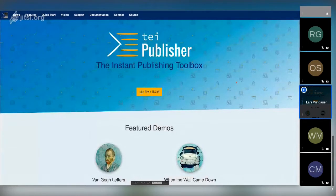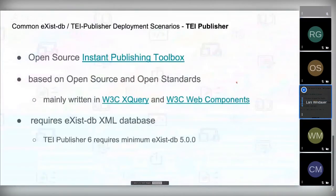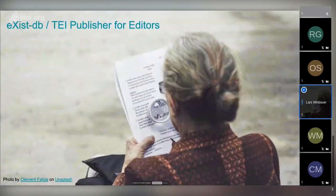TEI Publisher is a product we built on top of eXist-DB. It's our instance publishing toolbox. The main focus was on publishing TEI, but it is capable of rendering any kind of markup, like DocBook or any other format. It's open source and based on open standards — mainly written in XQuery and web components, both standards by the W3C. TEI Publisher's main dependency is eXist-DB, and to run the latest TEI Publisher 6 release, you need at least eXist-DB 5.0.